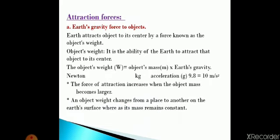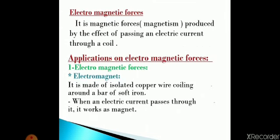An object's weight changes from place to another on the Earth's surface, meaning the weight is a changeable value. But the mass is constant — the mass of an object on Earth equals its mass on the Moon. So mass is constant and weight is changeable.